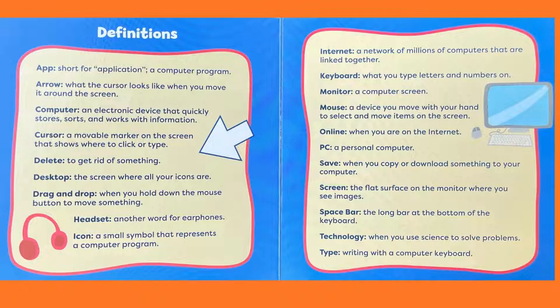Desktop: The screen where all your icons are. Drag and drop: When you hold down the mouse button to move something. Headset: Another word for earphones. Icon: A small symbol that represents a computer program. Internet: A network of millions of computers that are linked together. Keyboard: What you type letters and numbers on. Monitor: A computer screen. Mouse: A device you move with your hand to select and move items on the screen.